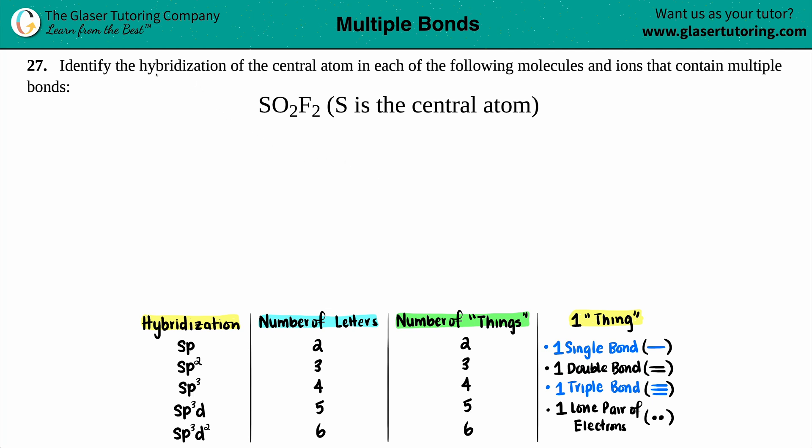Number 27, identify the hybridization of the central atom in each of the following molecules or ions that contain multiple bonds. And then we have SO2F2, and they do tell us that the sulfur is the central atom. So basically, we just have to find the hybridization of sulfur, because sulfur is the central atom.